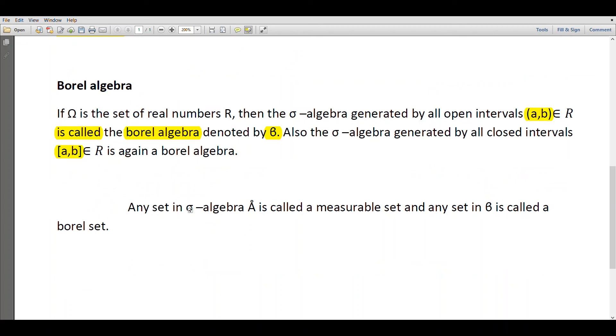Any set in a σ-algebra is called a measurable set. Any set in script B, the Borel algebra, is called a Borel set.